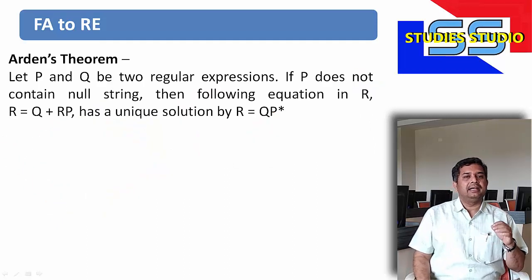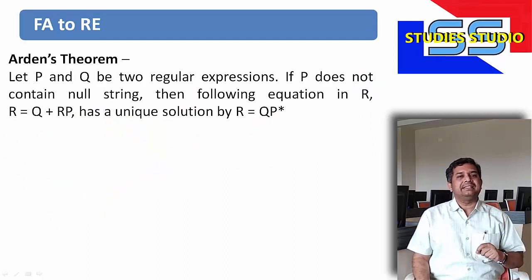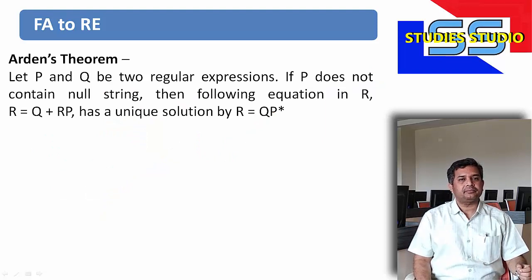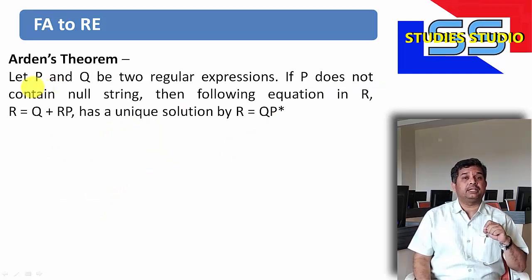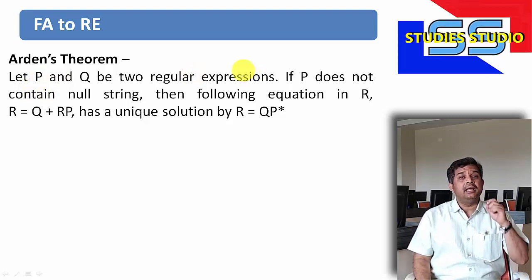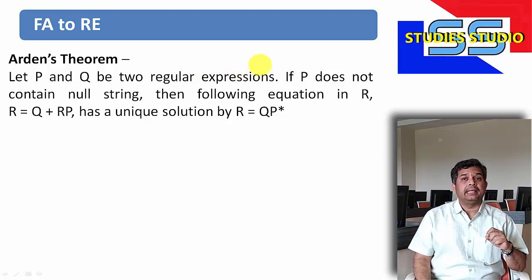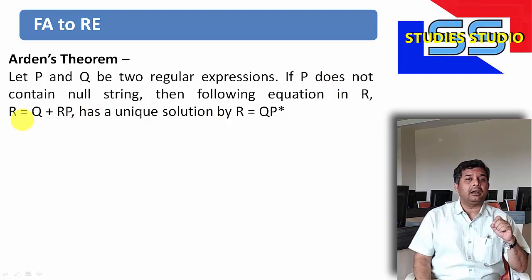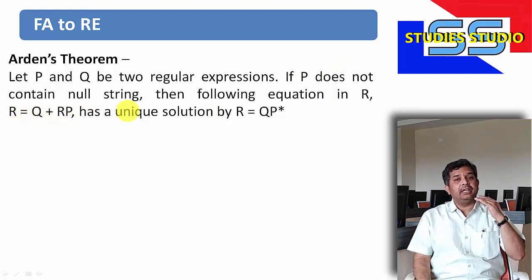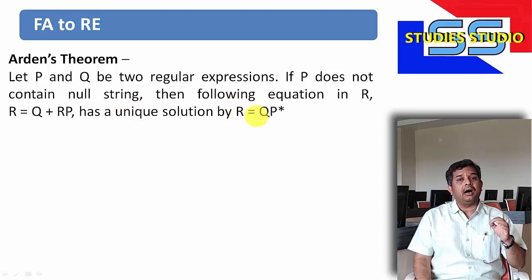Before we start, let us recall Arden's theorem. Arden's theorem says if we have two regular expressions P and Q, and P doesn't contain any null string, then if we have an equation R equal to Q plus R·P, we will have a unique solution: R equal to Q·P star.